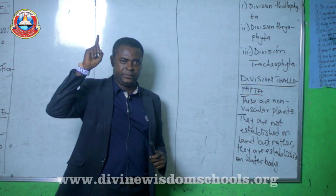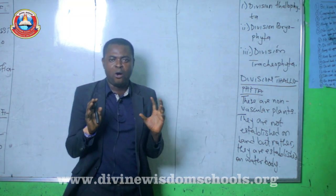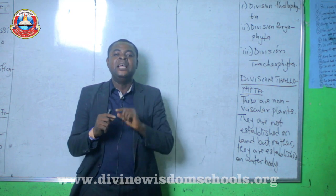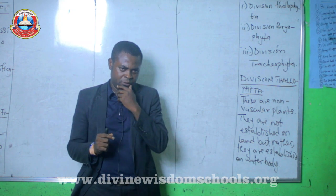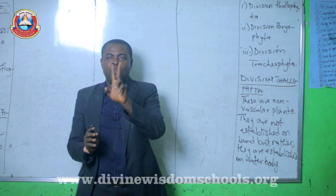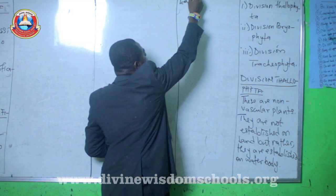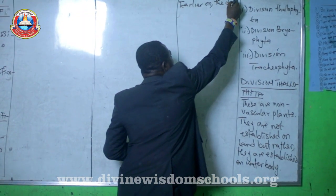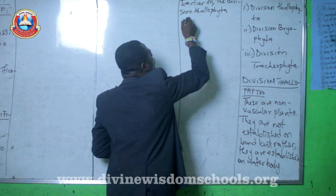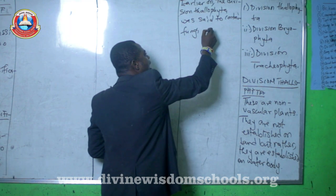In the old days, if you read old editions of biology textbooks, they would tell you that division Thallophyta is made up of two groups of organisms: the fungi and the algae. That was when fungi were considered to be plants.